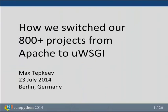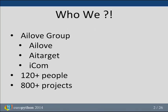The talk is called 'How We Switched Our 800-Plus Projects from Apache to UWSGI.' So who is 'we'? I work for a company called ilove — it's a Russian web agency. We do websites mainly. We are part of the ilove group, which consists of three companies: ilove, iTarget, and ICOM.